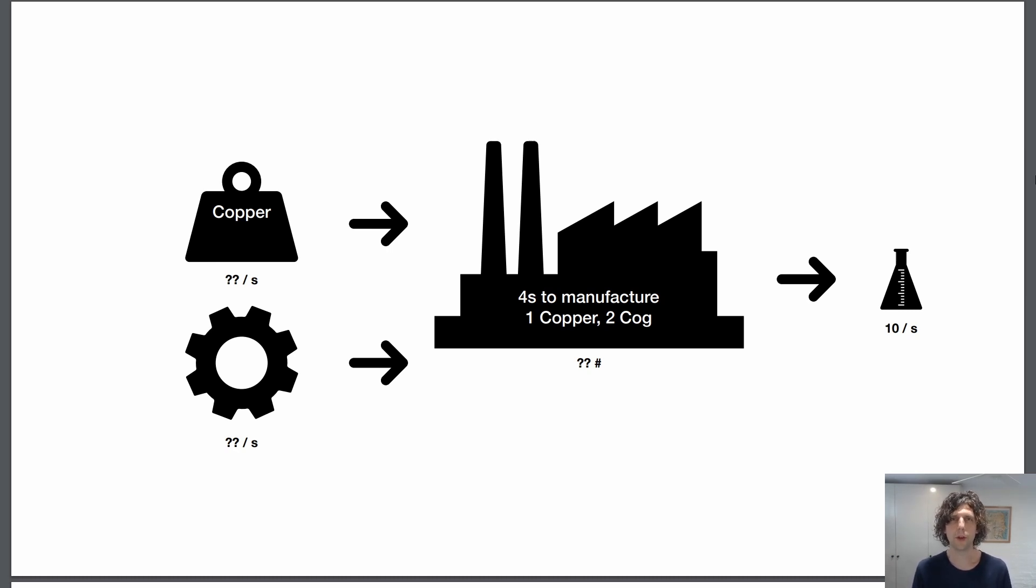Now for this particular example you could probably just do some math, scribble it out, and you'd figure out that you need about 40 machines to get this sort of output with 10 copper per second and 20 cogs per second.